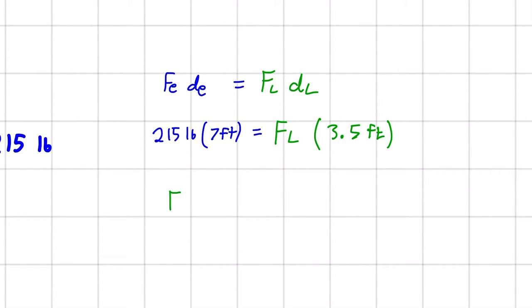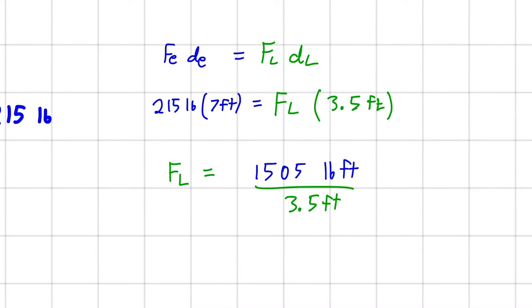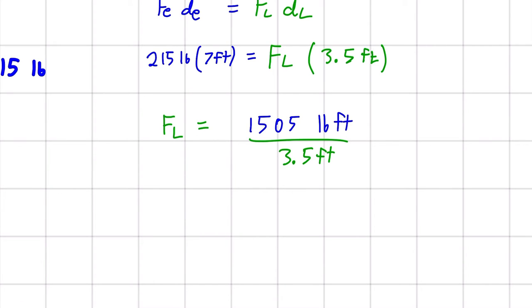So let's write that out. FL is going to be equal to this here. 215 pounds. And once again, I'm just going to actually multiply these two together in this step. So it will be 1,505 pound-feet divided by 3.5 feet. That is equal to FL. And we just type this into our calculator. And we will get that FL is equal to 430 pounds. Noticing that the feet cancel out and we're left with just the units of pounds.